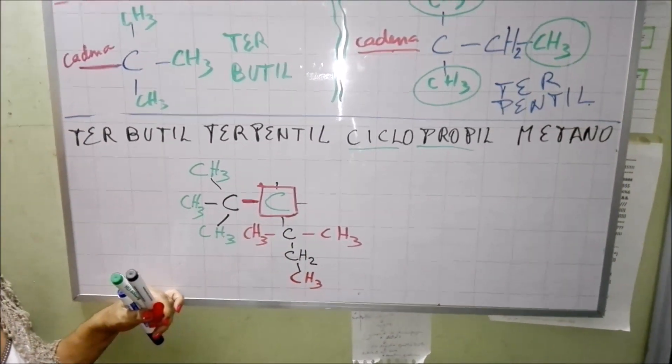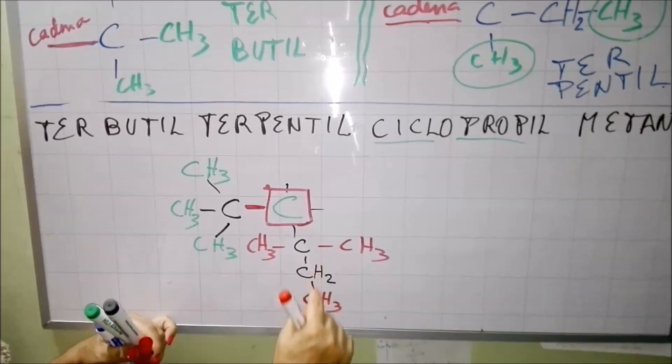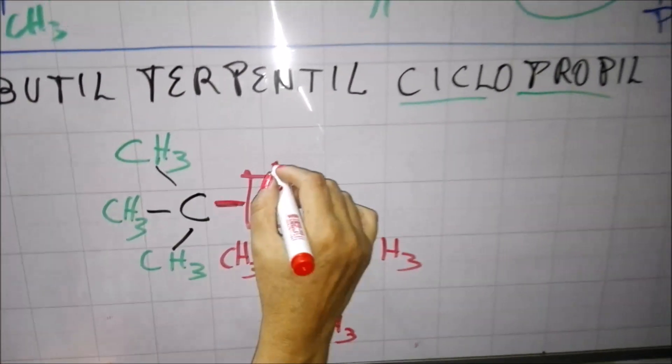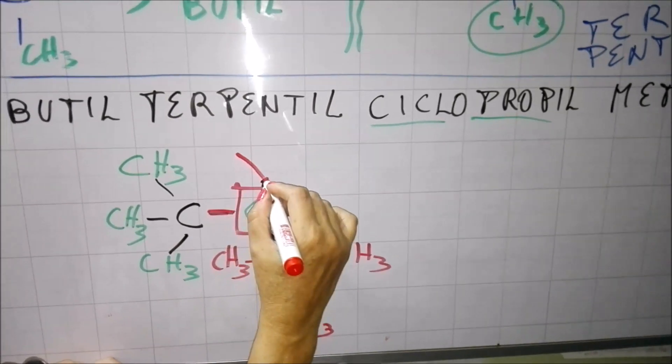Entonces aquí yo tengo mi ciclo 1, 2, 3, 4, 5. Ahí tengo mi ciclo pentil.